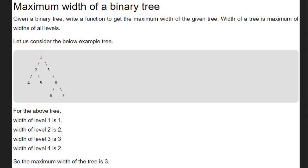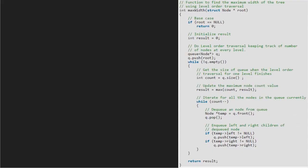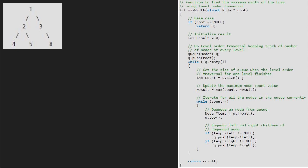The width of a tree is the maximum width of all levels. In this example, the maximum width will be 3, which is for level 3. Now let us see the algorithm which will assist us in finding the maximum width of a binary tree. Let us also have a sample tree to test the algorithm.